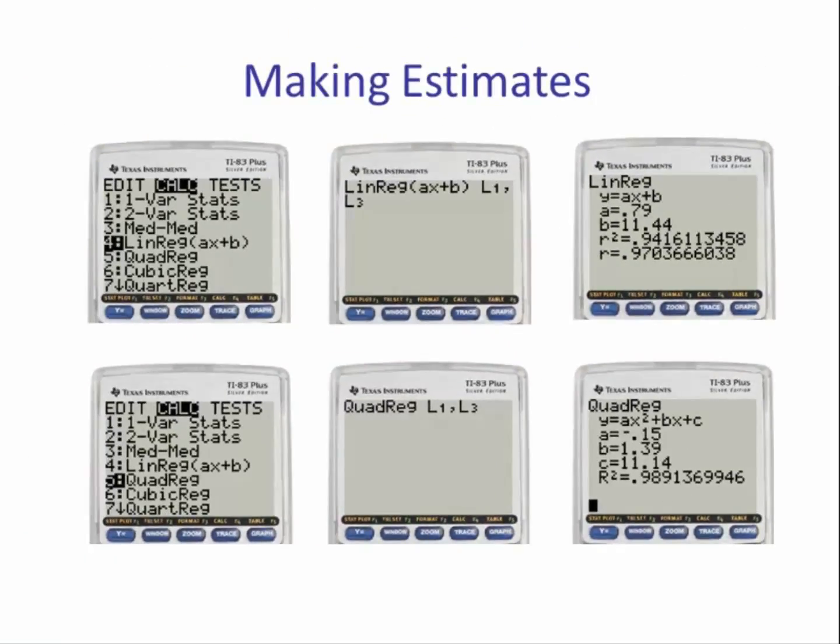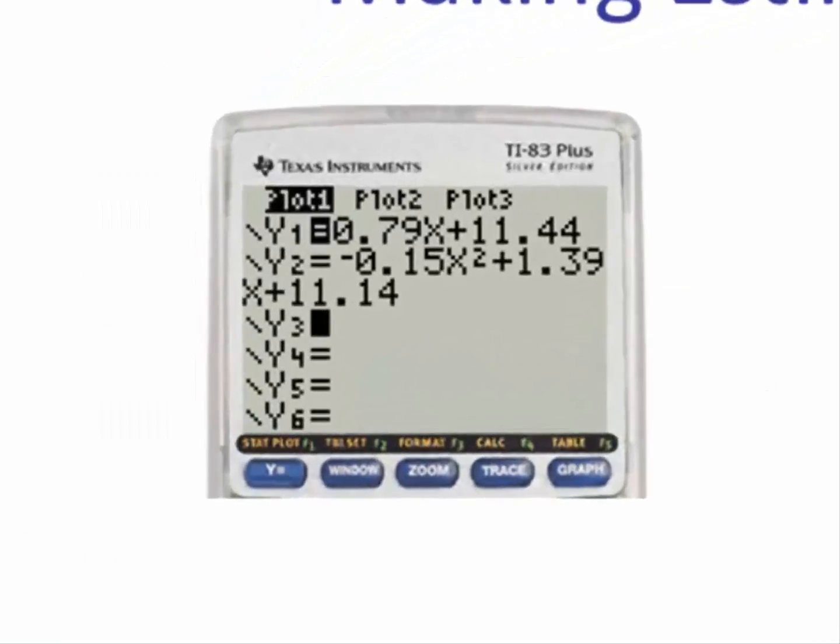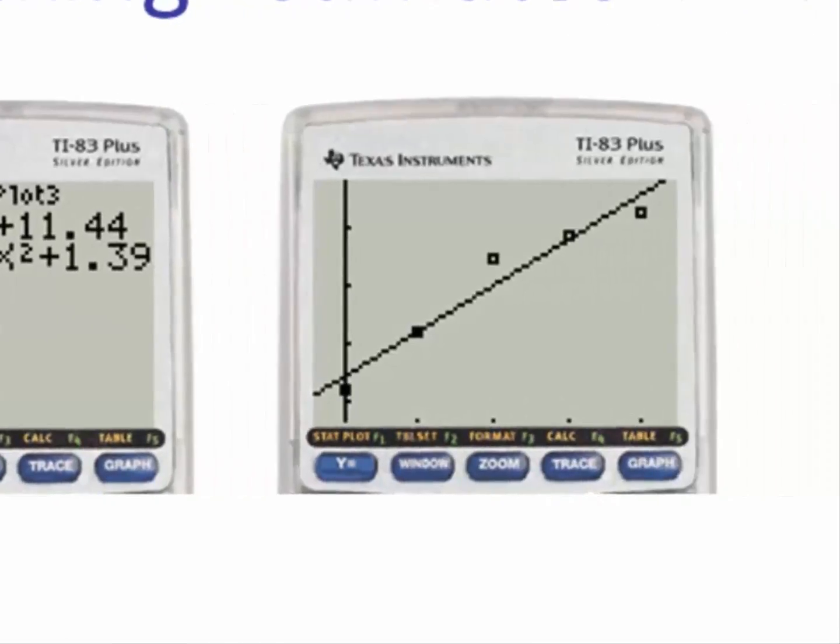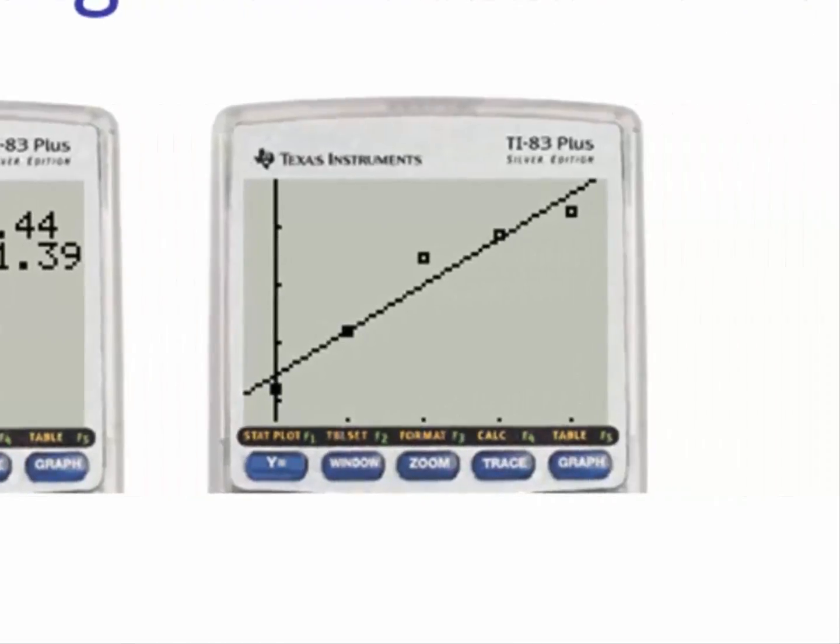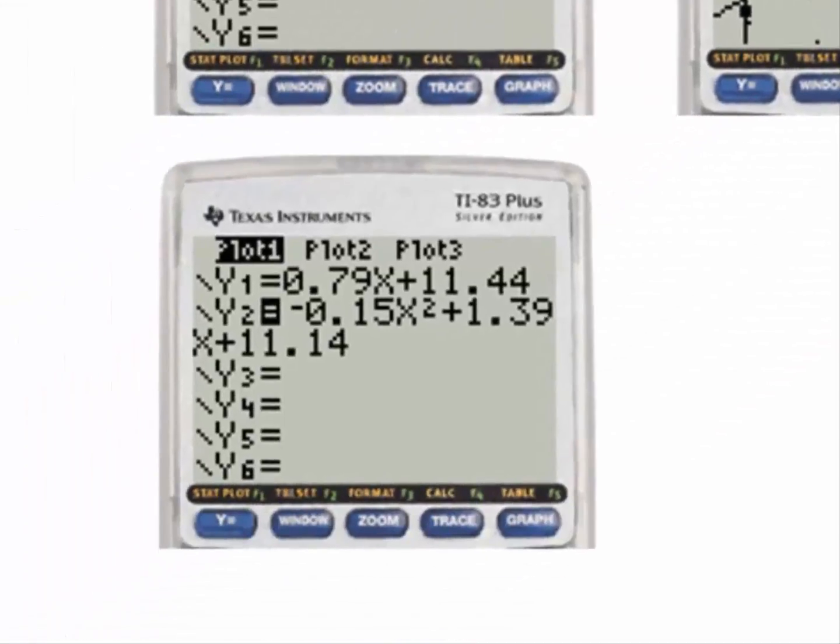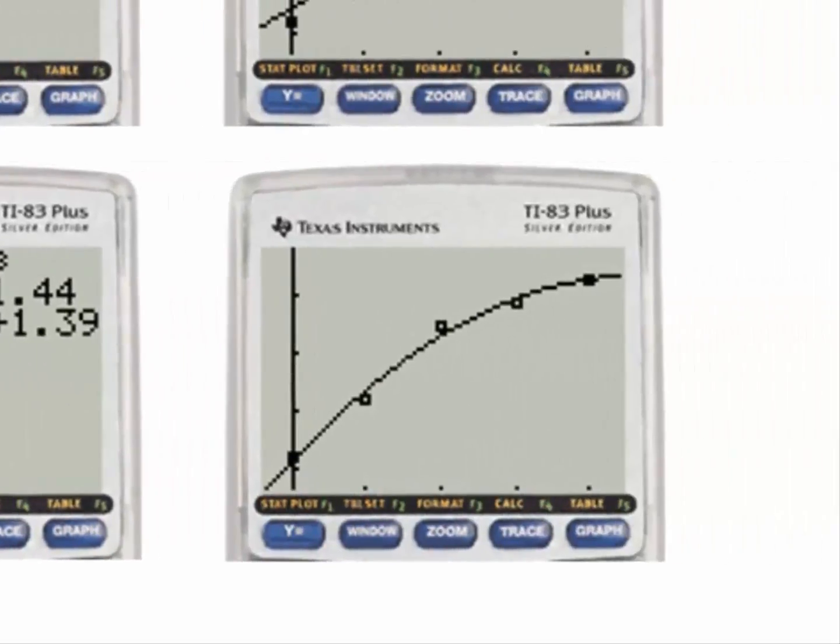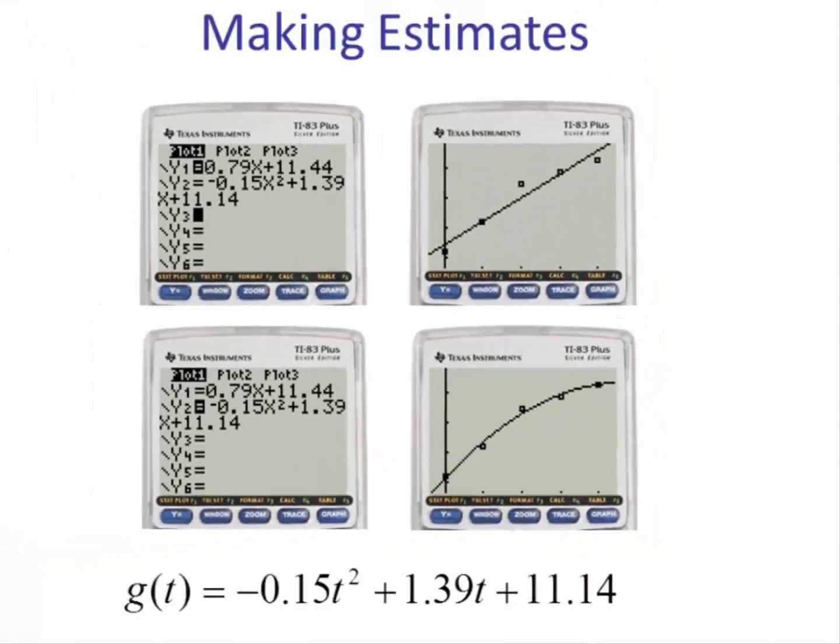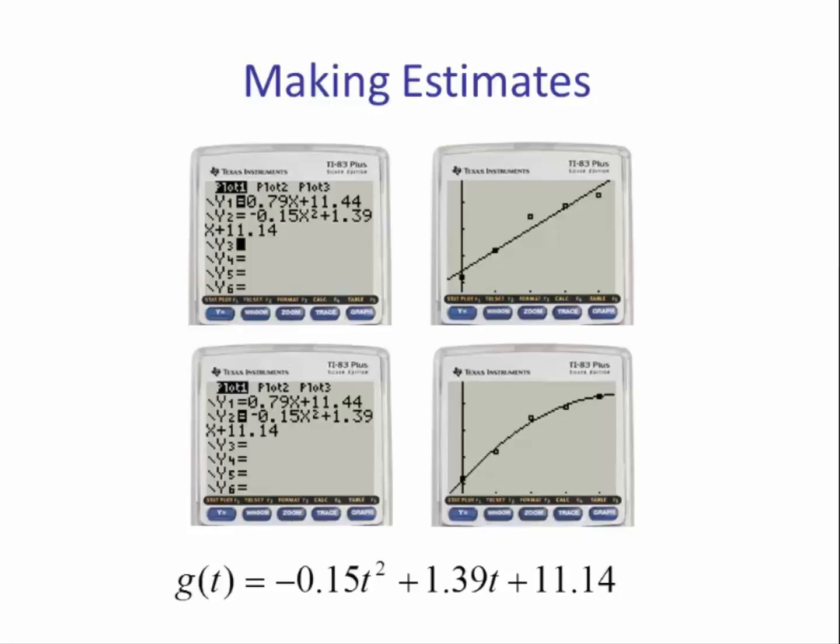Let's look at the graphs. So Y1 is the linear model and it's doing an okay job of modeling the data. Next, if we unselect Y1 and put the quadratic in Y2 and graph, we see that the quadratic is doing a better job of modeling the data. So g(t) will be the quadratic: negative 0.15t squared plus 1.39t plus 11.14.